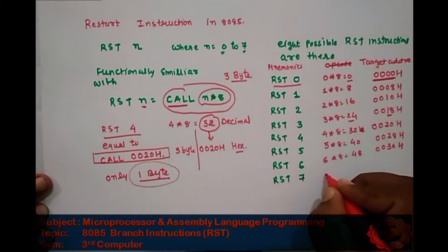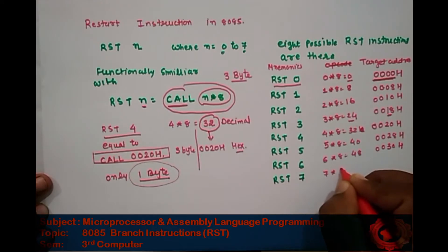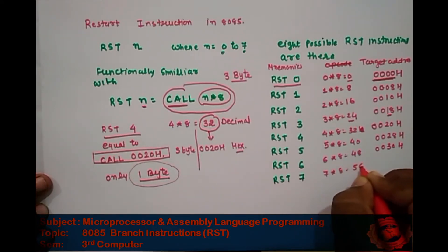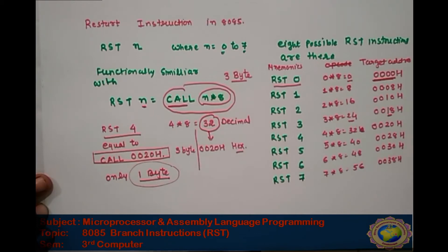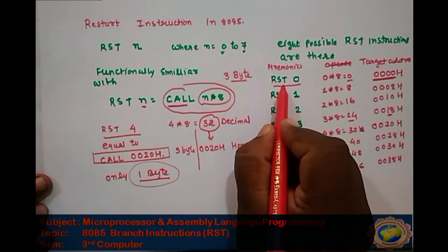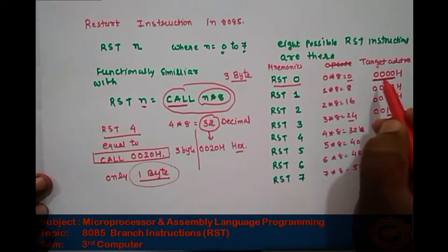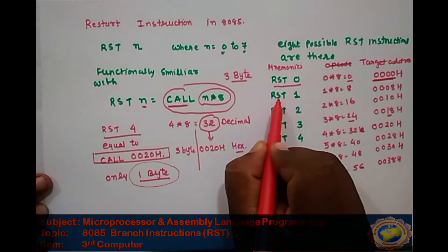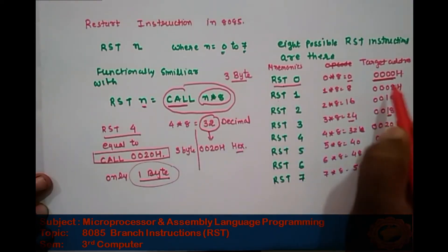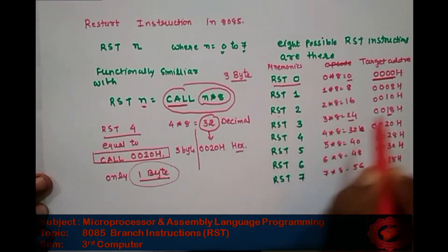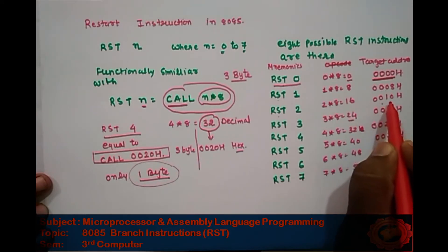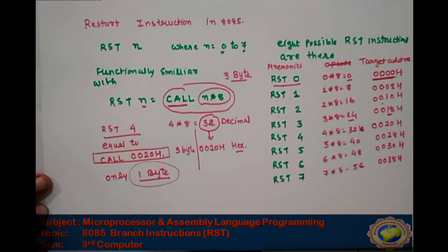For RST 7, 7 multiplied by 8 is 56, and the hex of 56 is 38, so the address is 0038H. So when we use the RST 0 instruction, it performs CALL 0000H. When we use RST 2, it uses 0010H. This is the use of the RST instruction.